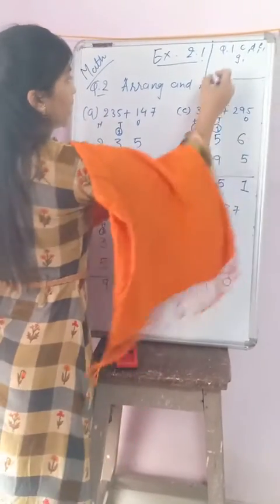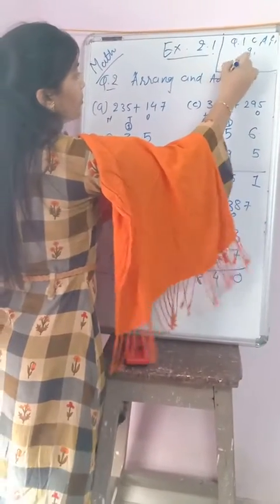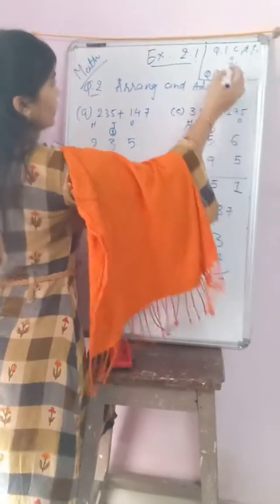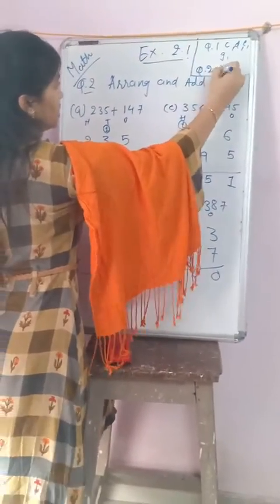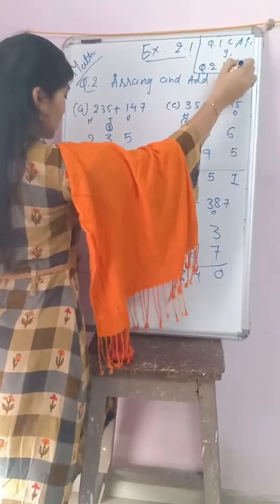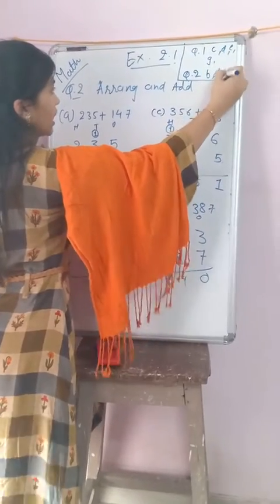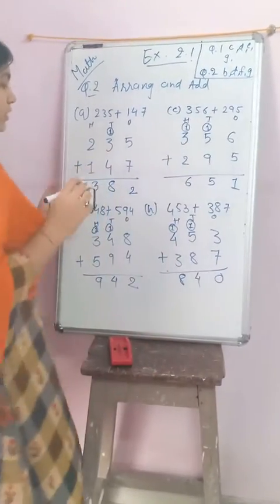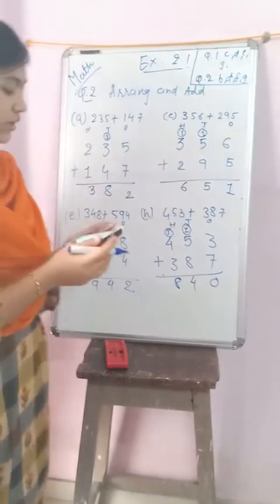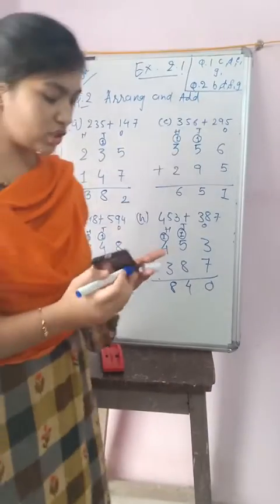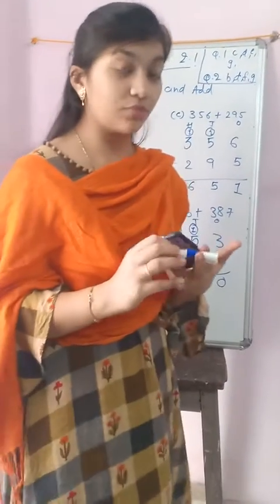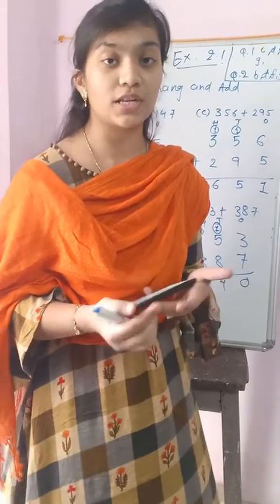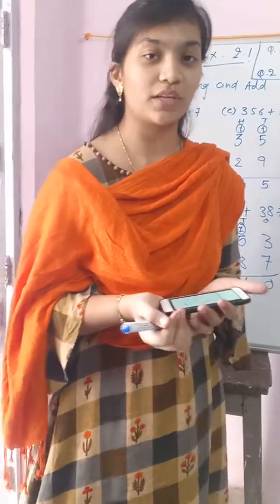The rest — B, F, and G — are your homework. I want to end my session here. Next time we will do the addition of four-digit numbers. Thank you so much.